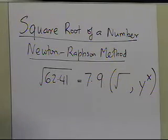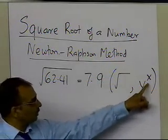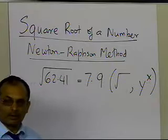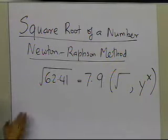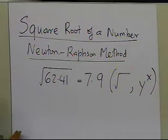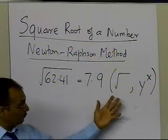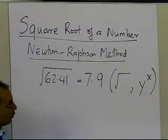y raised to power x is simply: you say 62.41, and then you say raised to power 0.5, and you will be able to get 7.9 as the answer. Now, there is some algorithm which allows you to do that on your calculator or your computer.